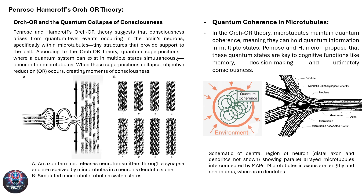The idea extends to the realm of electromagnetic consciousness, as microtubules are proposed to maintain quantum coherence, facilitating electromagnetic interactions that may encode information vital for cognitive functions like memory and decision-making. The schematic highlights how microtubules could act as quantum processors, using electromagnetic fields as mediums for consciousness. This theory challenges traditional neural computation models by proposing that consciousness involves quantum-level phenomena and electromagnetic field dynamics.